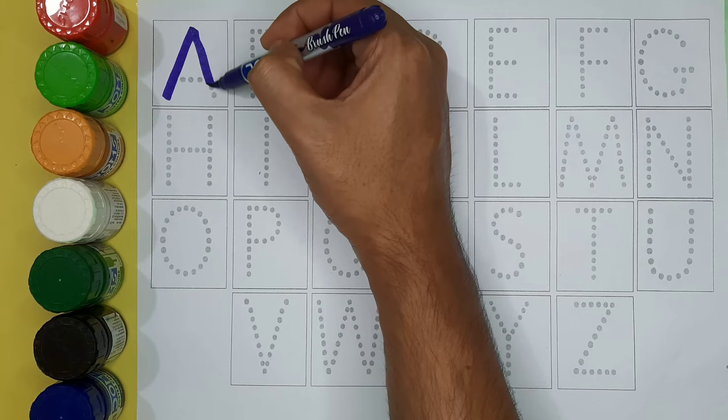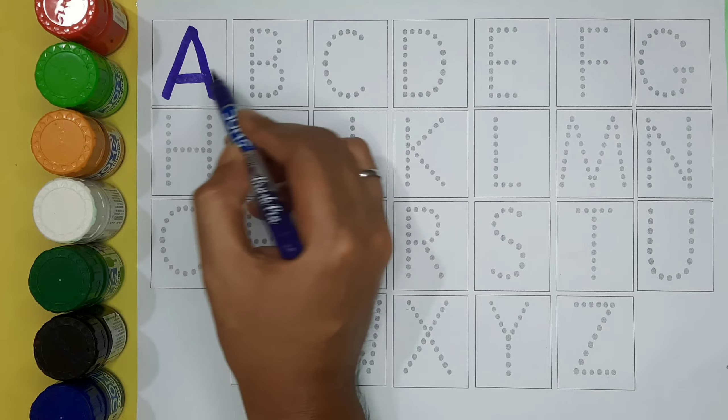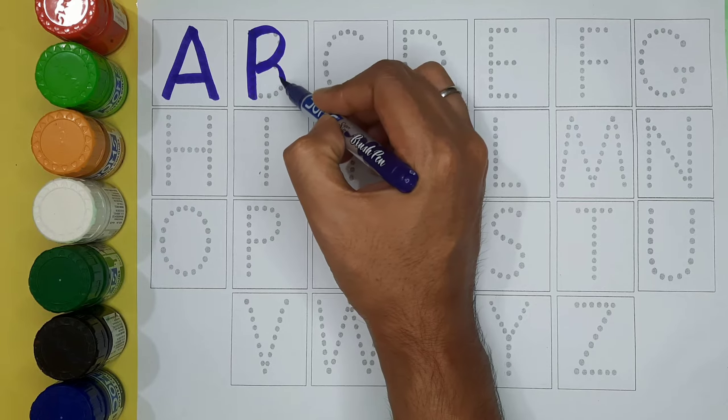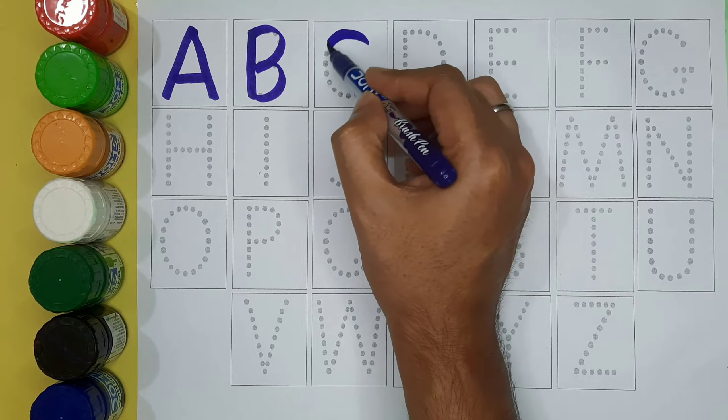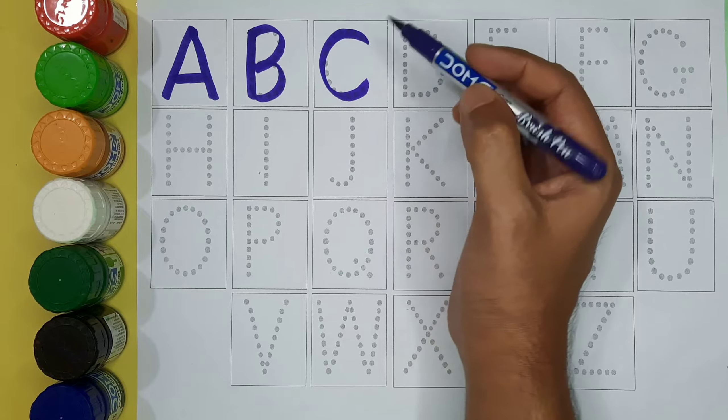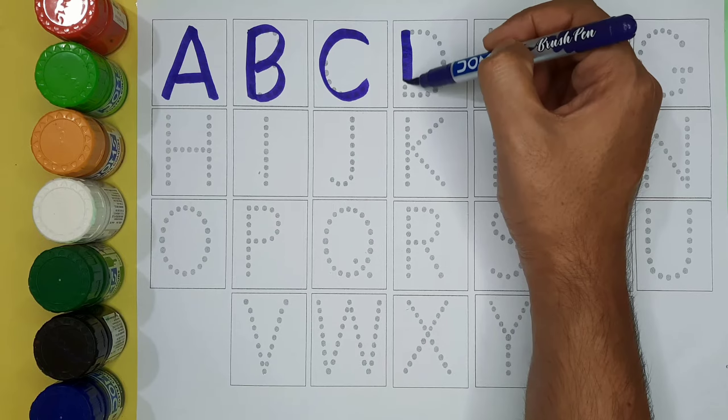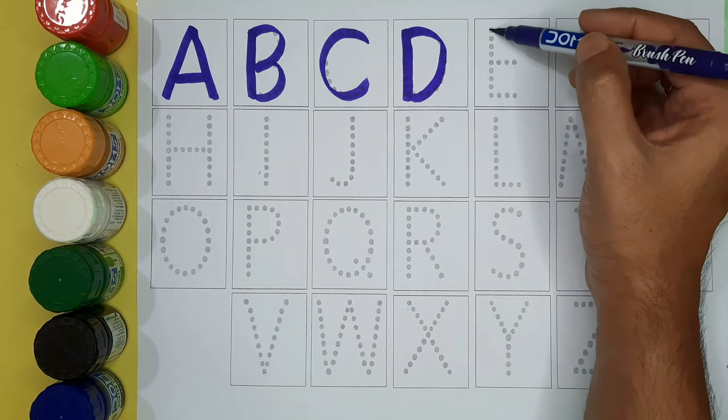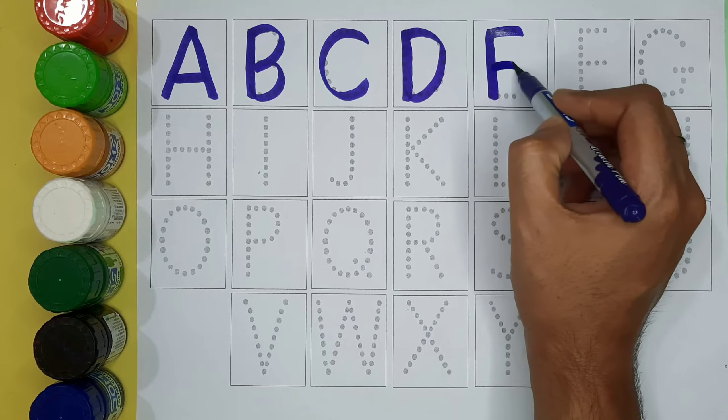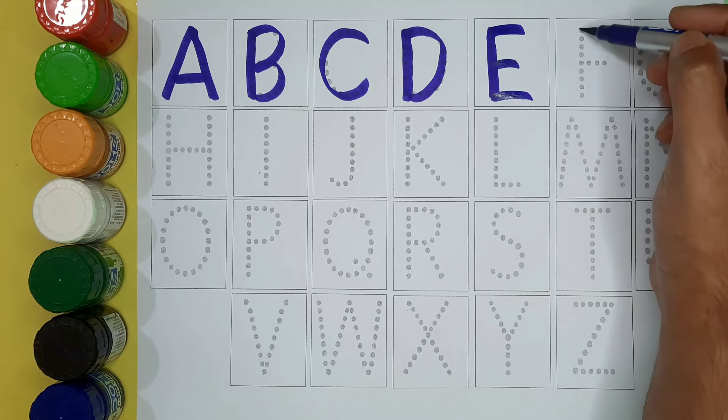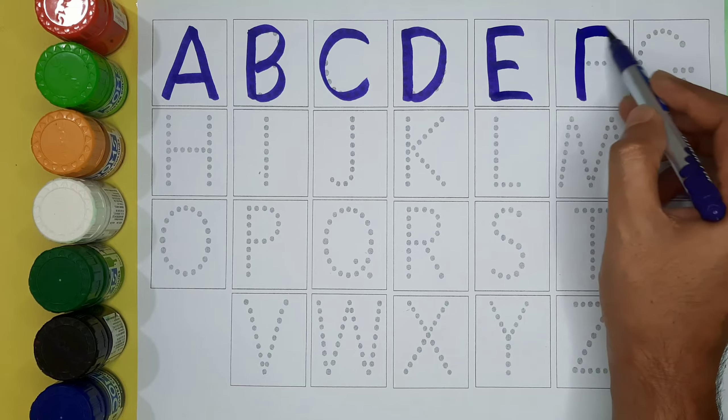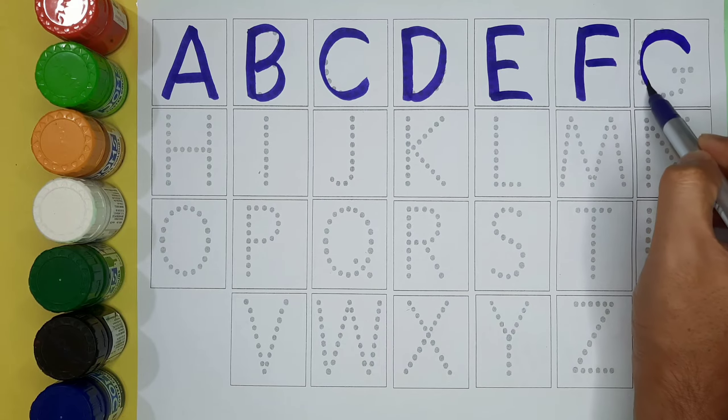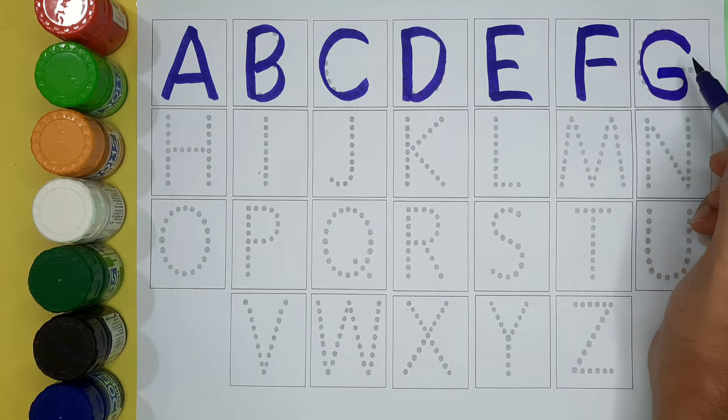A, A for ant. B, B for bat. C, C for cat. D, D for dolphin. E, E for egg. F, F for fish. G, G for grass.